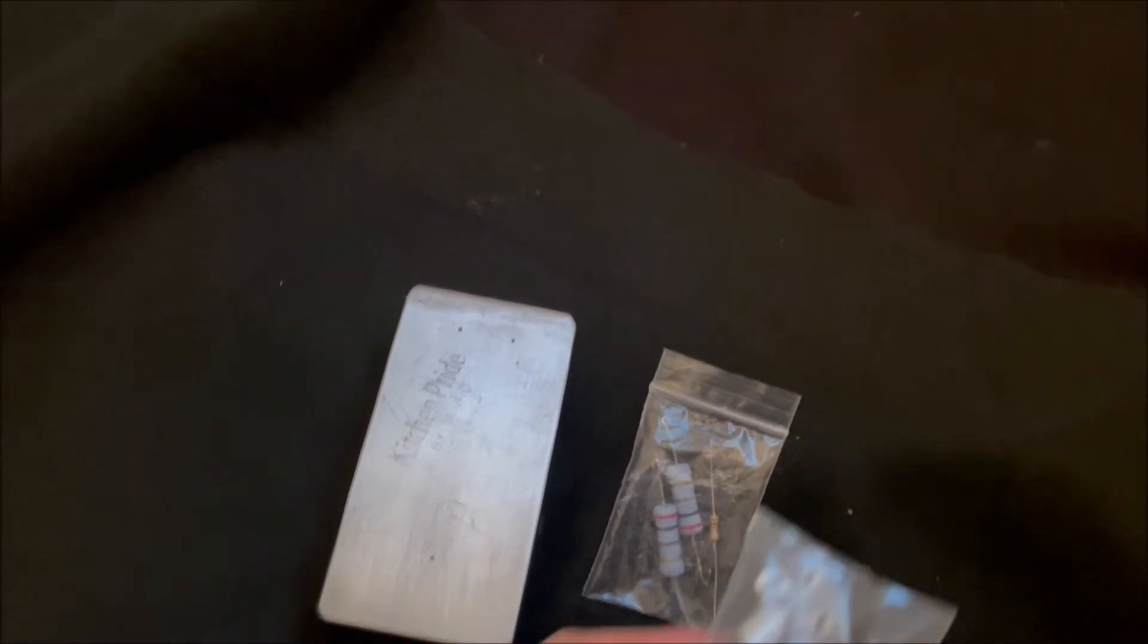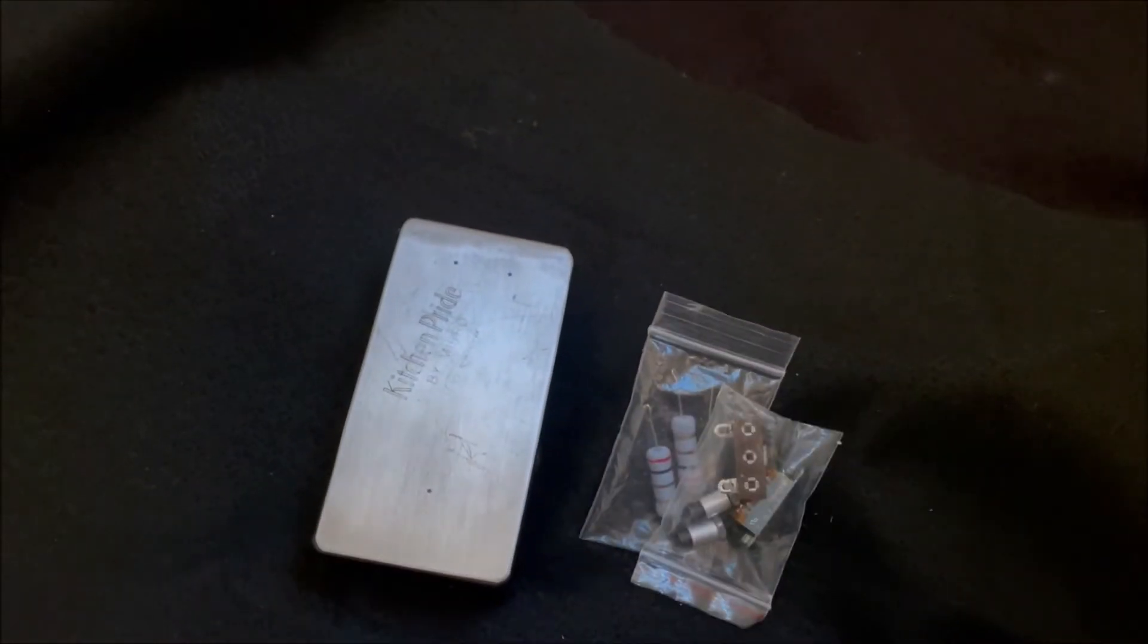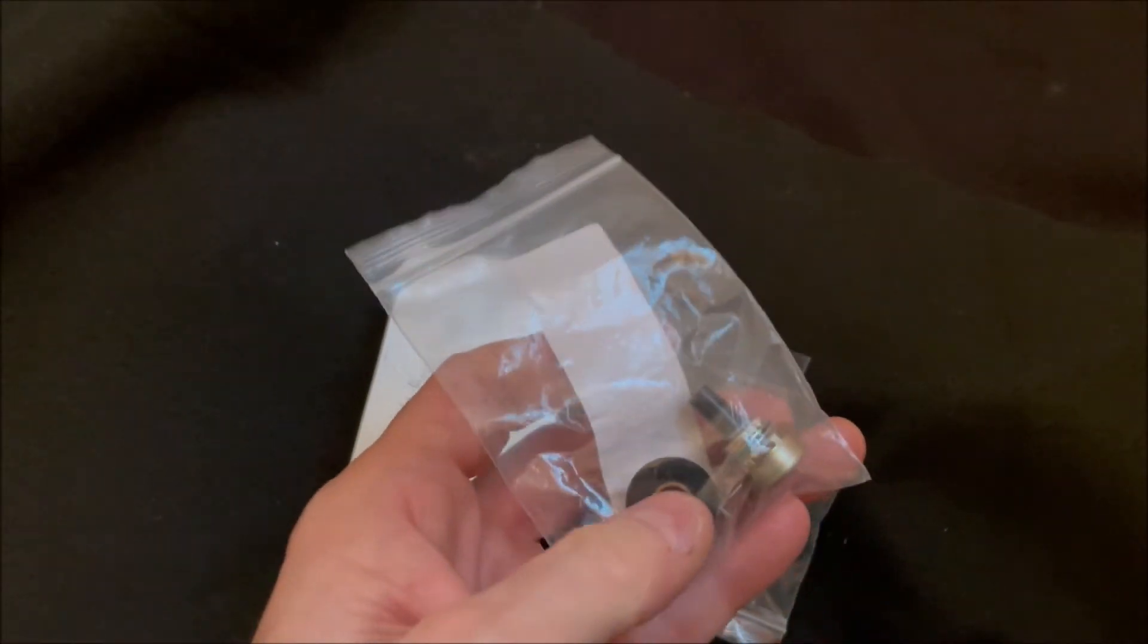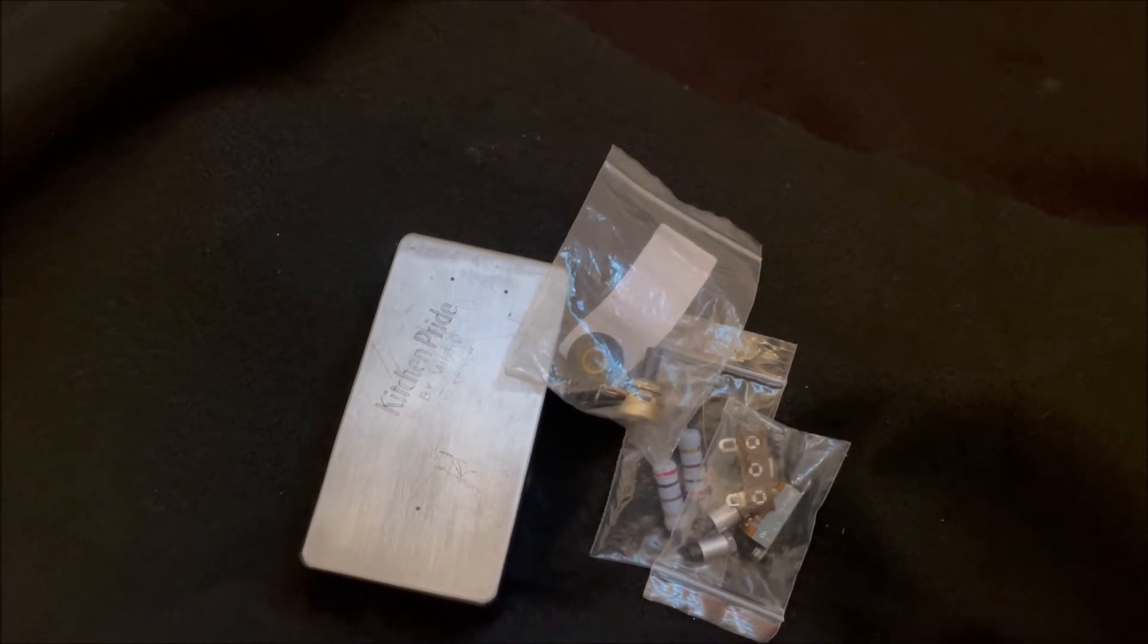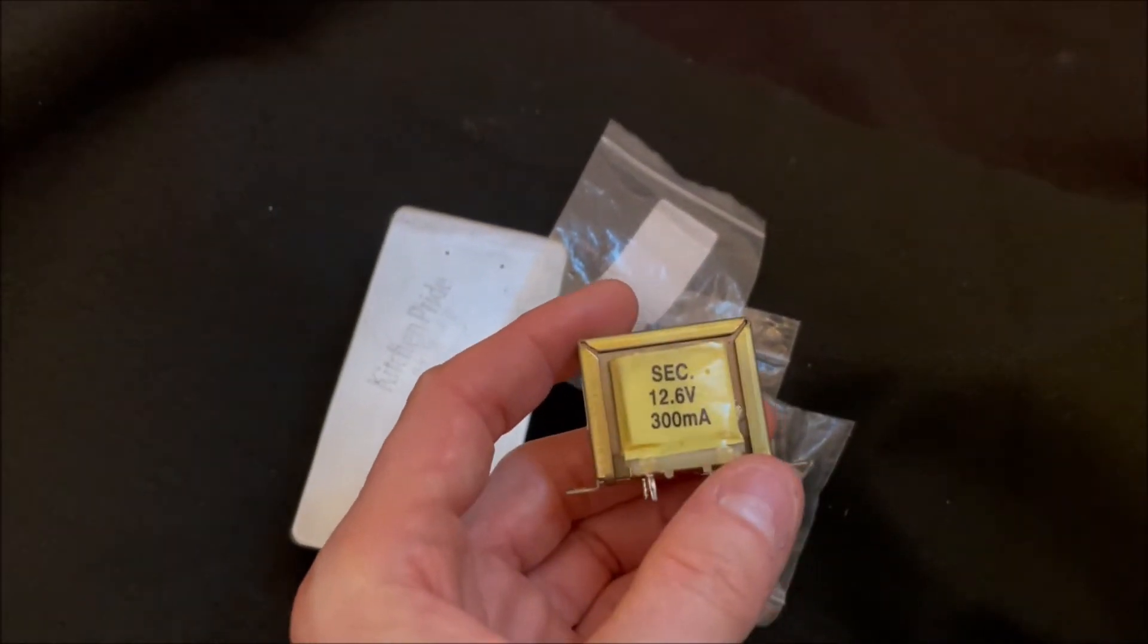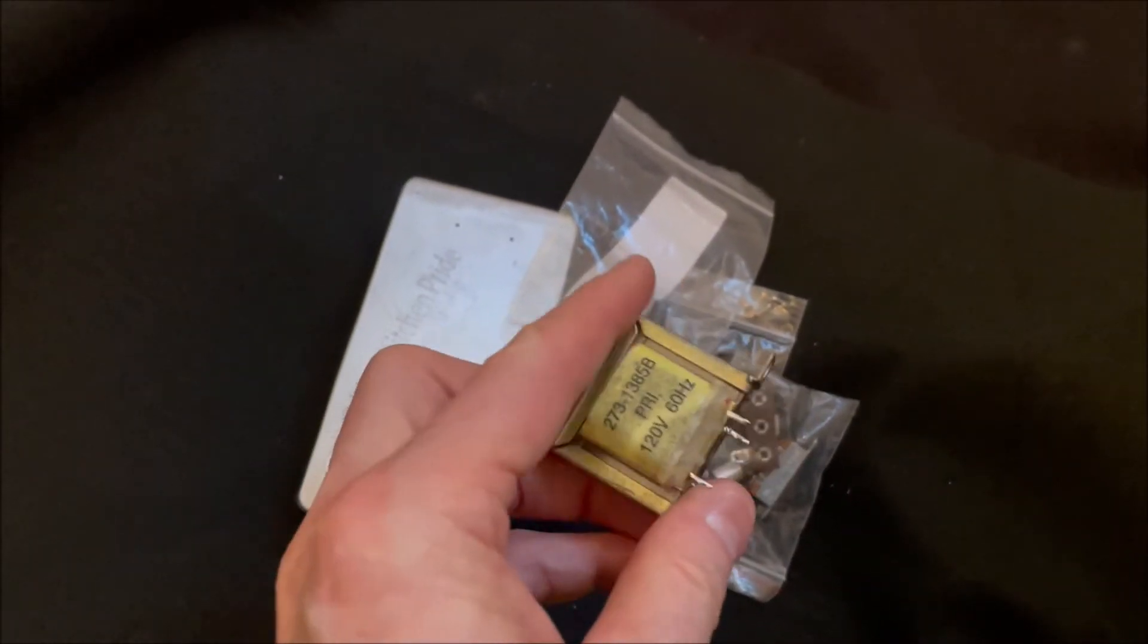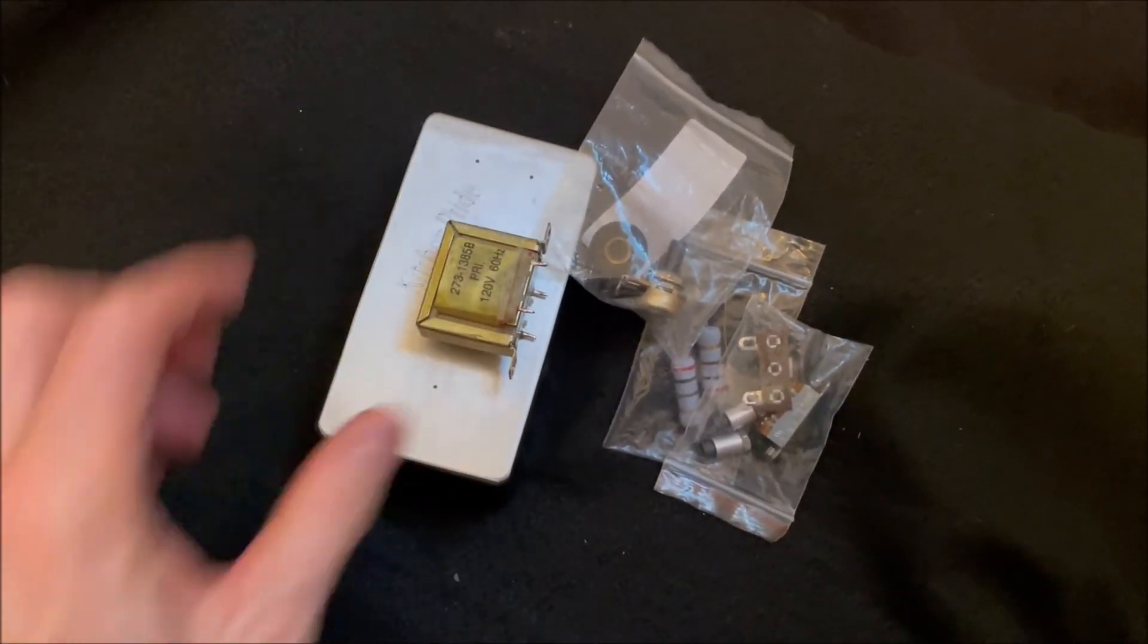And then I have my terminal strip, standoffs for the transformer, slide switch I'm using for the power switch, and my 500 ohm pot and a knob. The transformer will be this old Radio Shack 12.6 volt 300 milliamp PCB mount transformer that will be mounting to the side of the enclosure with the standoffs.